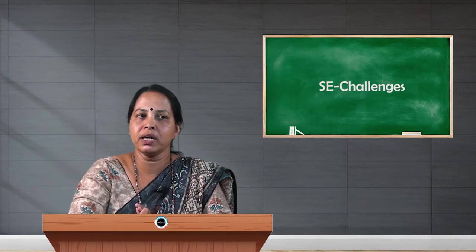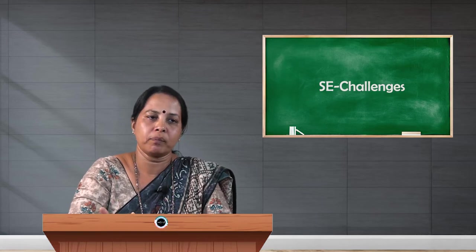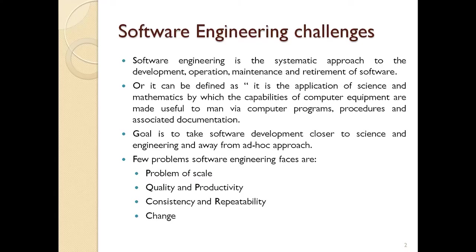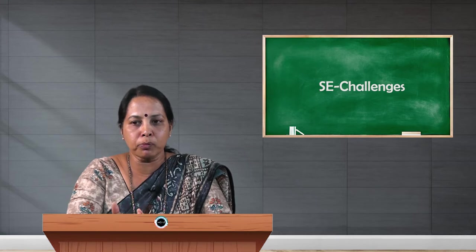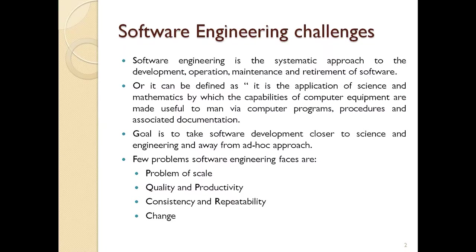Software engineering is not only about development — it also involves maintenance, management, and everything related. It can also be defined as the application of science and mathematics by which the capabilities of computer equipment are made useful to man through computer programs, procedures, and associated documentation. The goal is to take software development closer to science and engineering and away from the ad hoc approach.